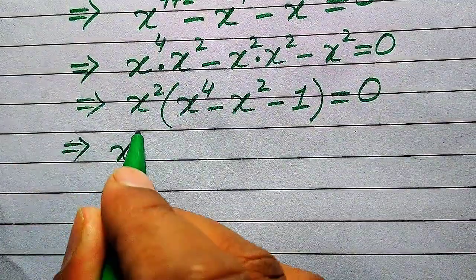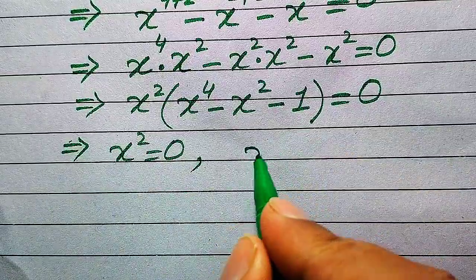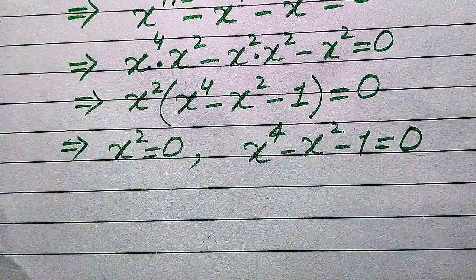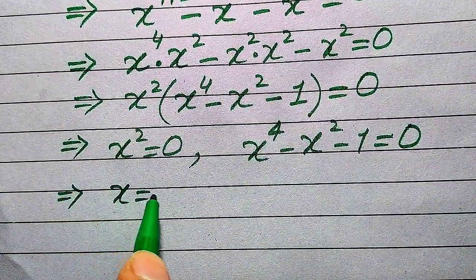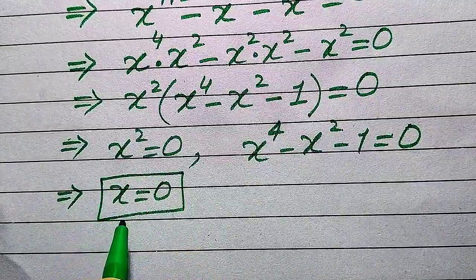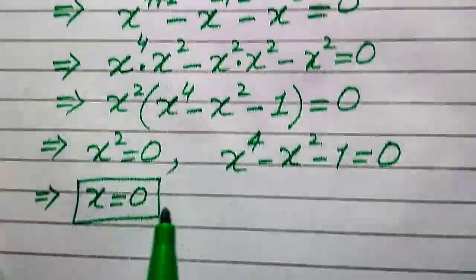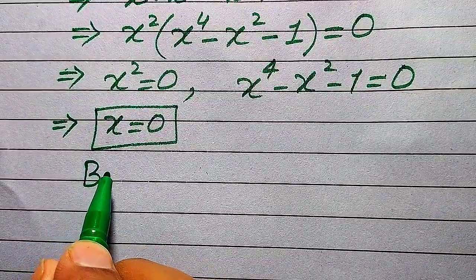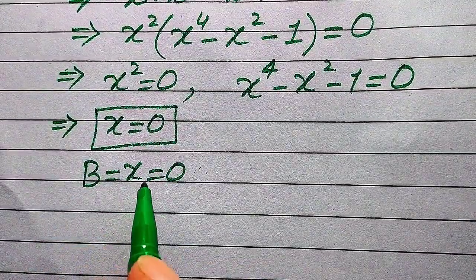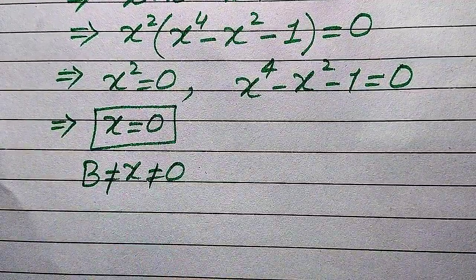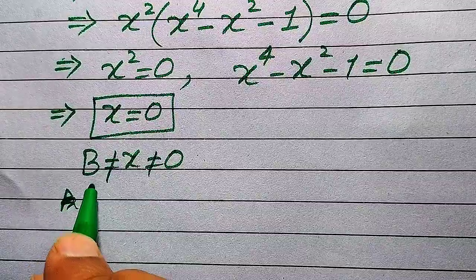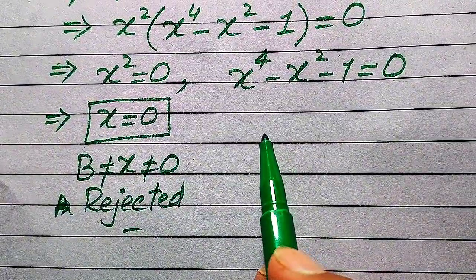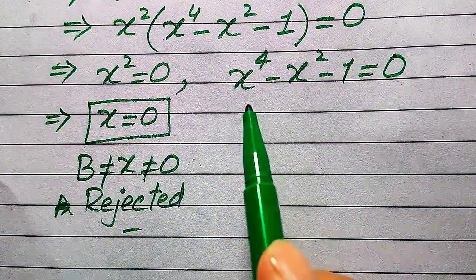This splits into two cases: x² = 0, or x⁴ - x² - 1 = 0. From the first case, x = 0, but since x is the base of the triangle, all side lengths must be non-zero and non-negative, so we reject x = 0.